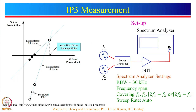For IP3 measurement, two tones are applied at the input of the DUT through a power combiner. The third order intermodulation product, which is 2F1 minus F2 or 2F2 minus F1, is present at the DUT output. One thing to note: the power combiner should give very high isolation between the two ports and also have very high return loss for F1 and F2.